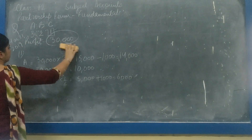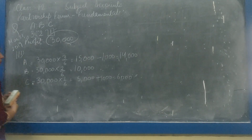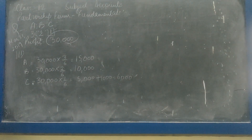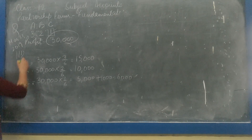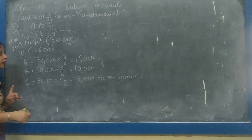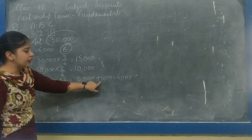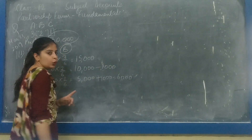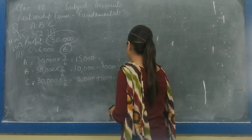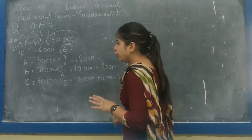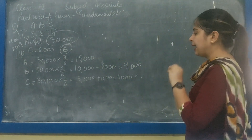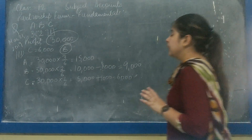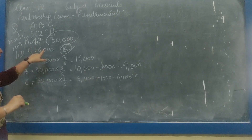Case 3: The guaranteed minimum profit of Rs. 6,000 payable to C is guaranteed by B. When there is a deficiency in C's profit, it will be borne by B. So 1,000 is deducted from B's share and given to C. A's share remains 15,000 with no adjustment. B's share becomes 9,000, and C's share becomes 6,000.